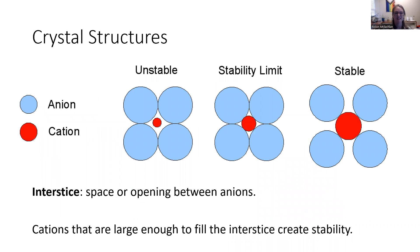Typically when you create these bonds, you'll have a cation at the center and anions bonded around it. The interstice is the space or opening between these anions. Now, cations that are really small compared to the anions around them, so there's a lot of empty space, they're not really touching each other, that's unstable.